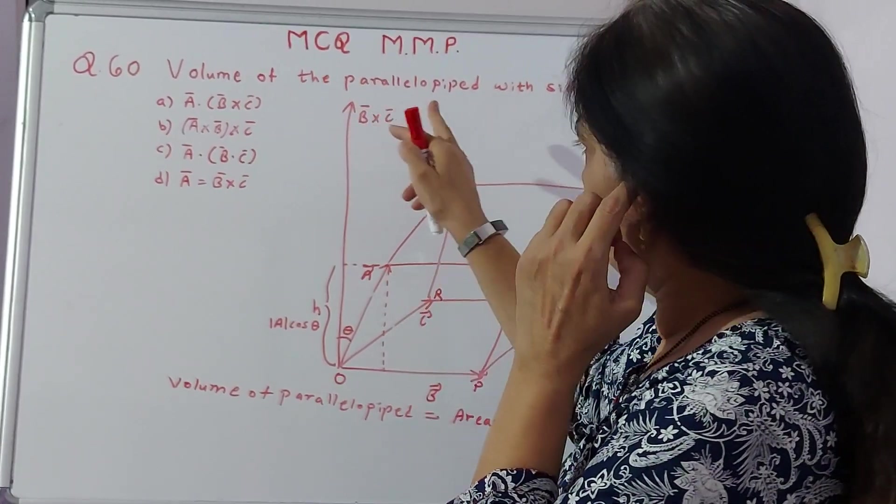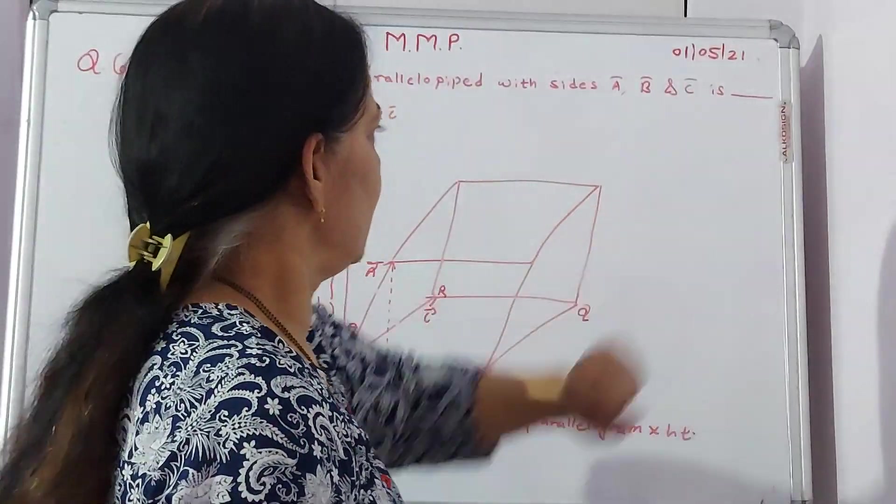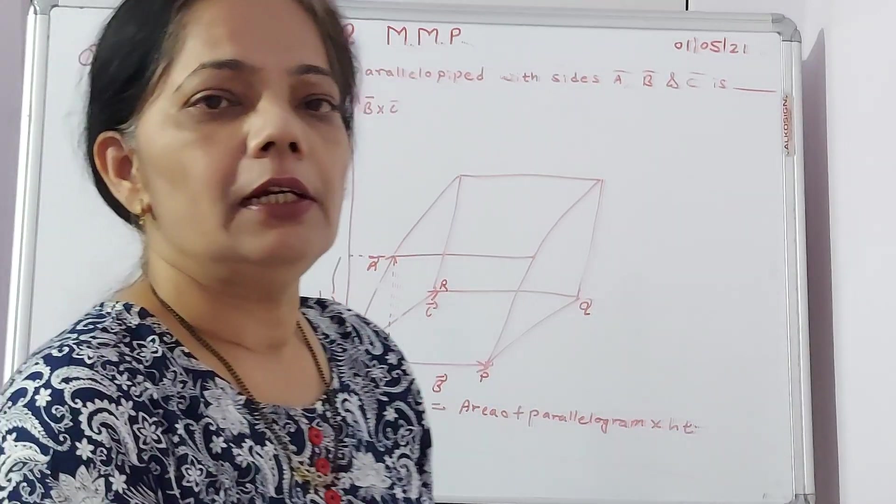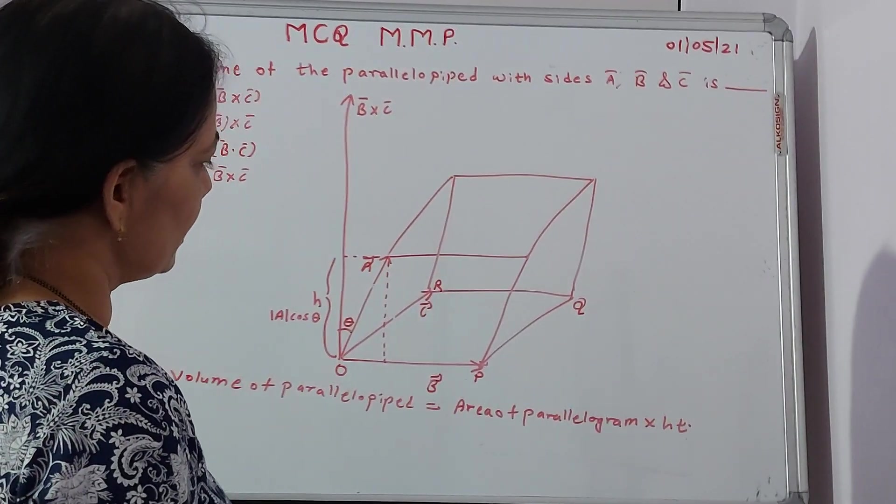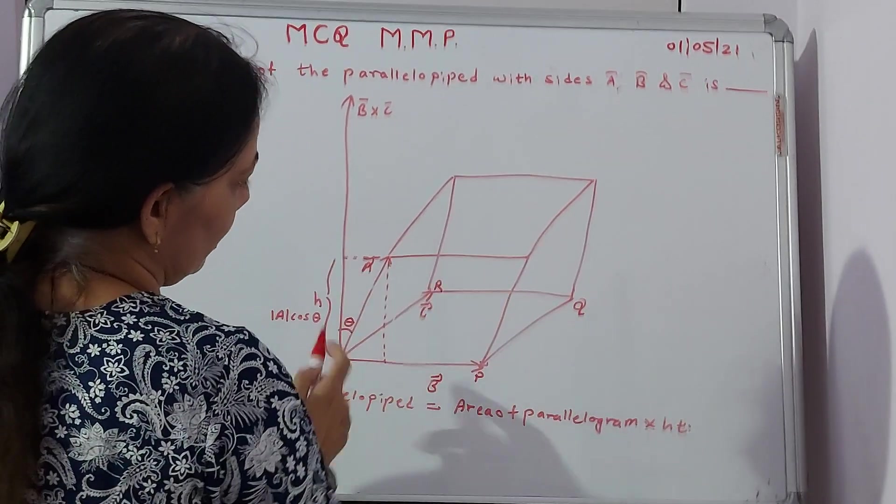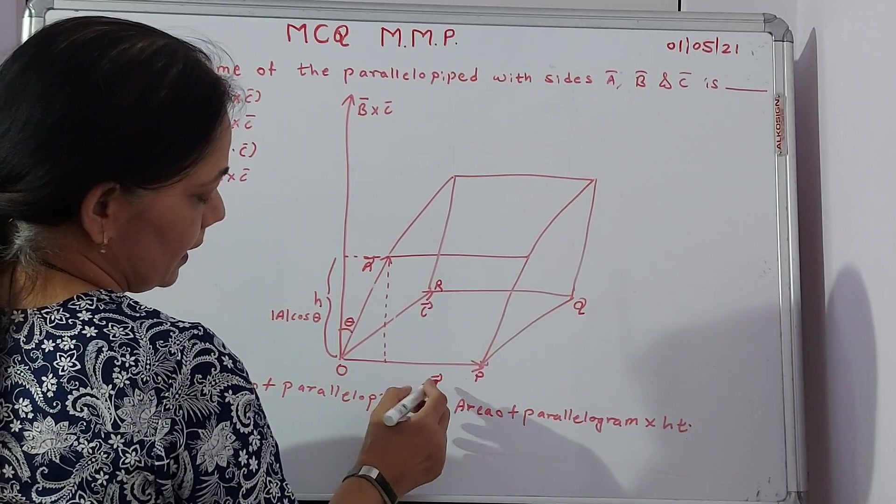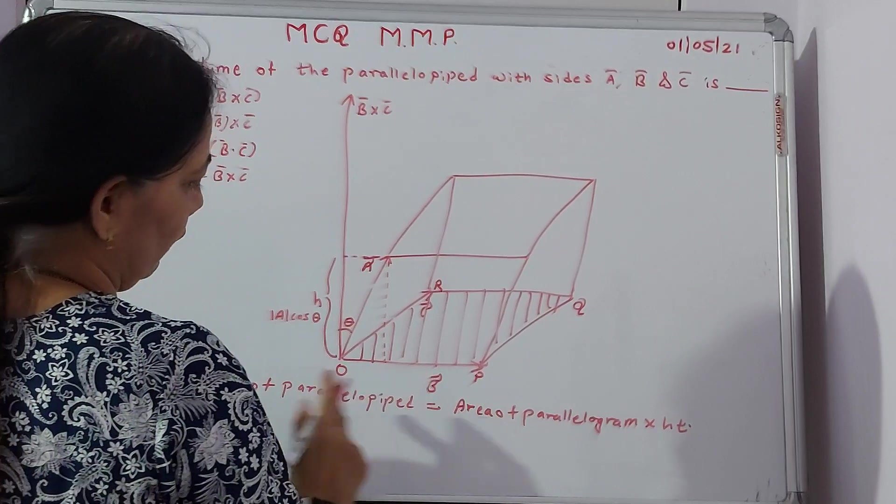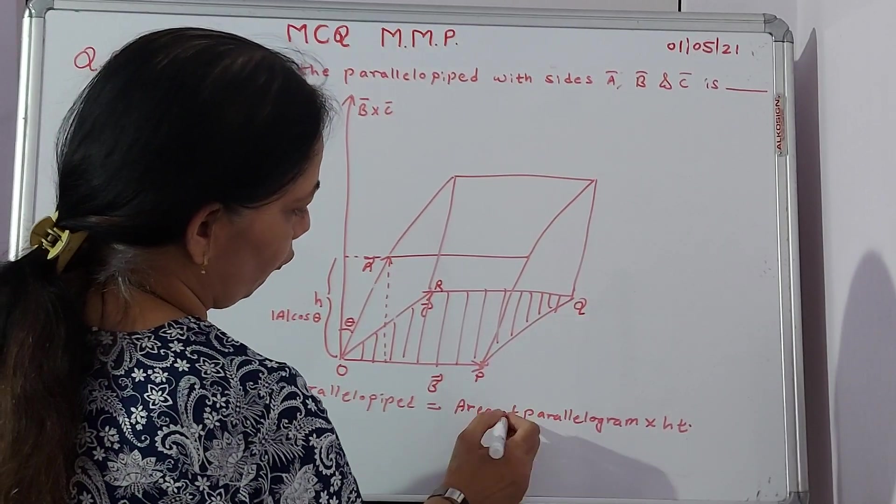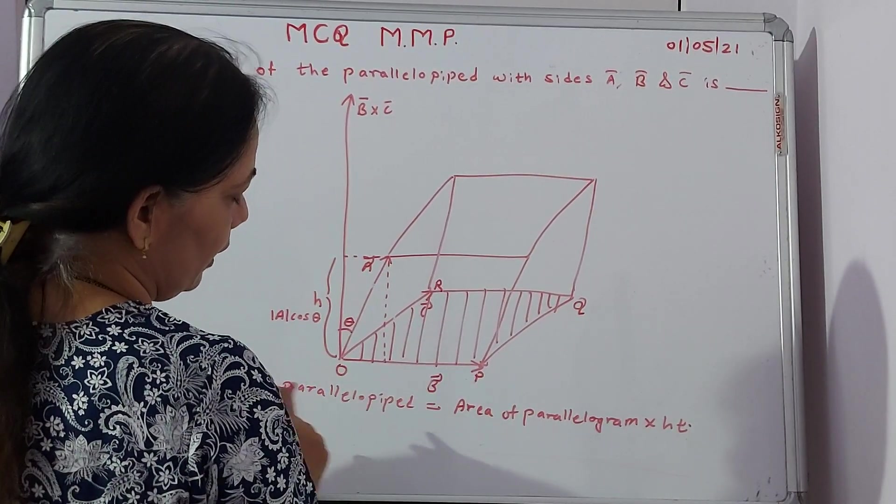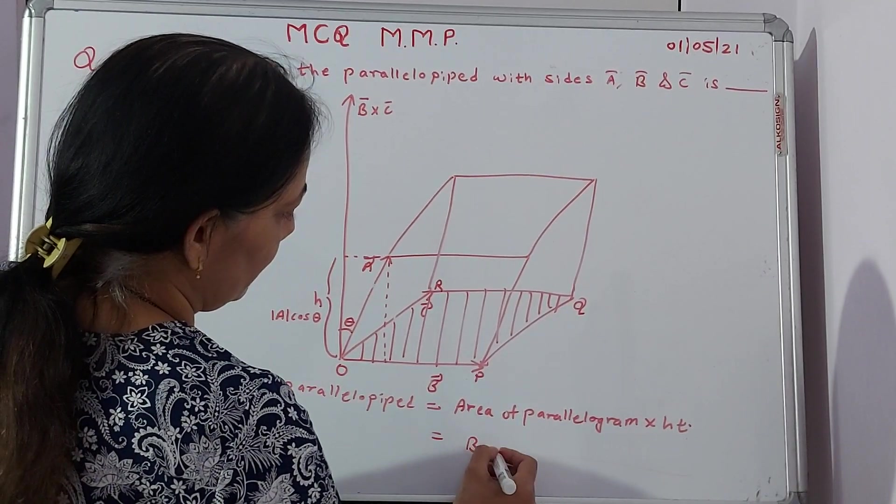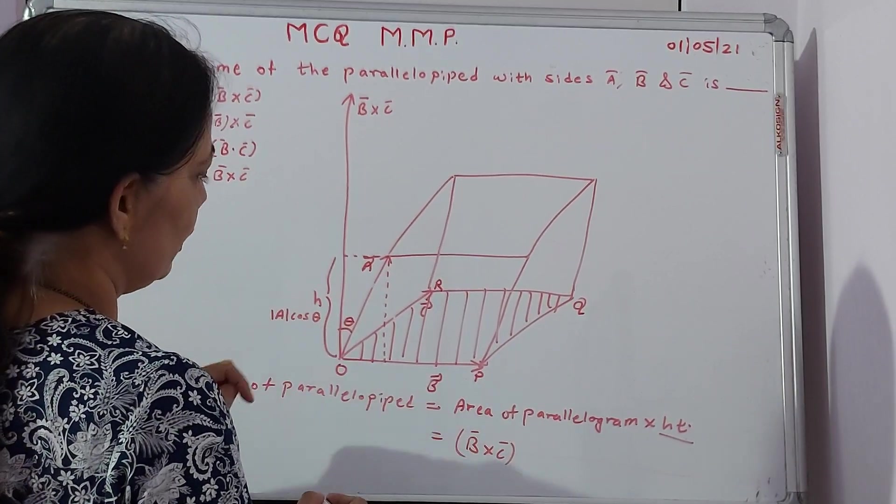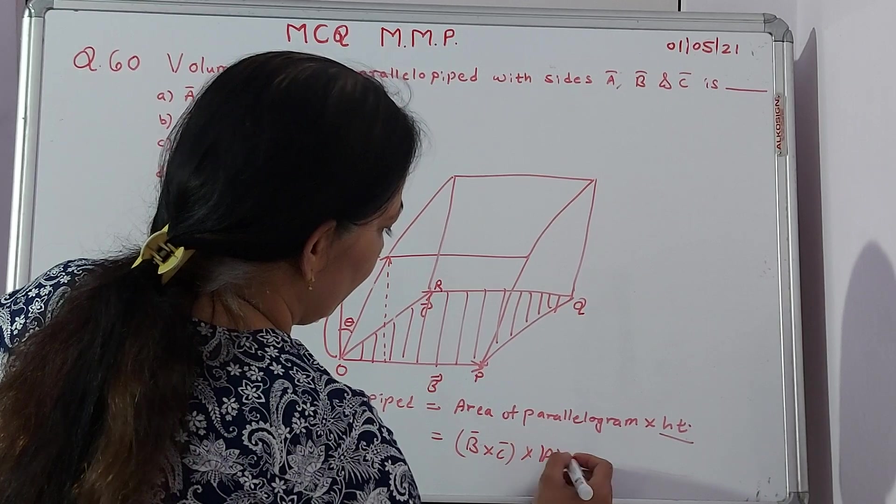Now the last question. The volume of parallelepiped with sides A, vector B and vector C. So we are given choices A dot B cross C or A cross B cross C or A dot B dot C or A equals B cross C. We have seen this in theory that suppose you have a parallelepiped like this. So here we have shown point O, P, Q, R where I have the two edges. This is my vector B, this is my vector C. So this is nothing but I can say the base of the parallelepiped, and this will give me what is called as area of my parallelogram, which one? O, P, Q, R. So this is nothing but which is shown by B cross C. And height is what? Height is this H. So H is nothing but A cos theta. Over here we got the value is equal to A cos theta.